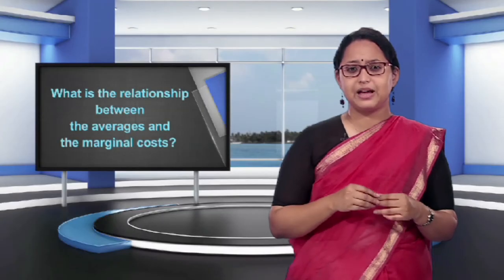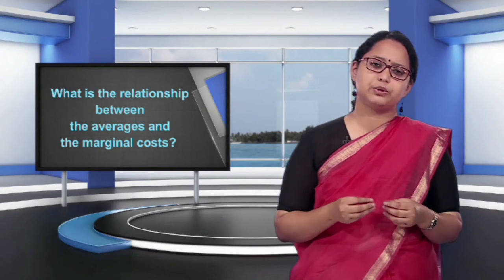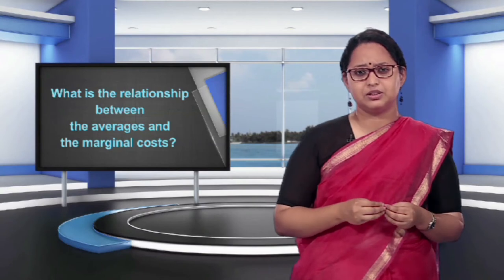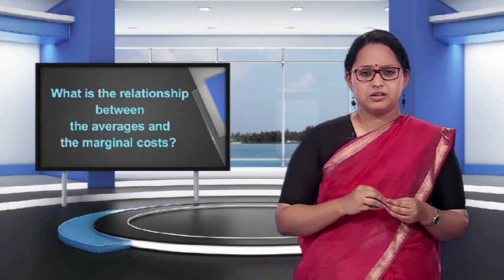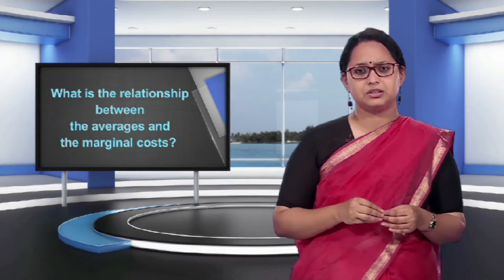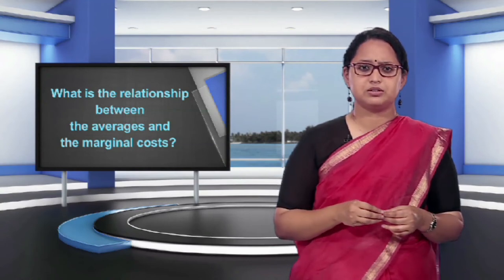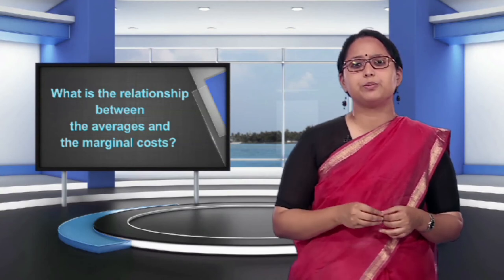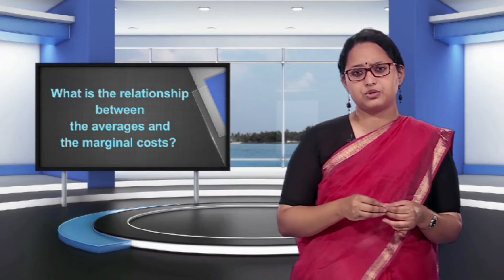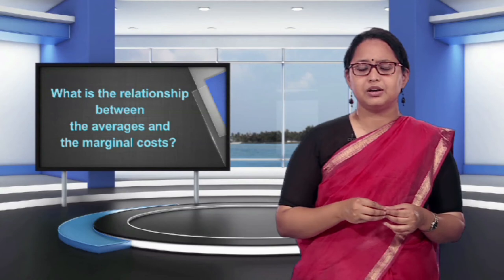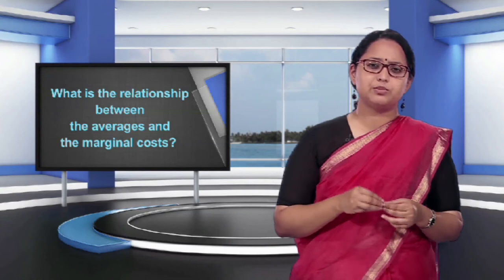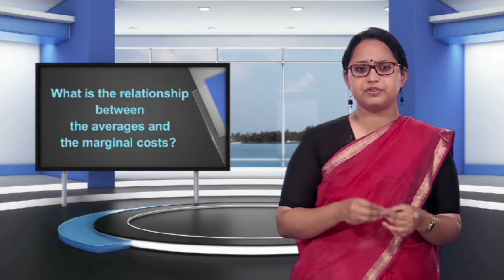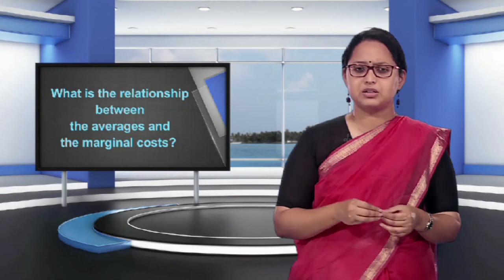What is the relationship between the averages and the marginal costs? Let us understand how marginal and averages are related with an example. Suppose a student scored average marks of 50 in 5 subjects. If her marks for the 6th subject are 80 — more than her average of 50 — the total score of 6 subjects becomes 330 and the average goes up to 55. In another case, with the same average of 50, if the marks for the 6th subject were 20 — much less than her average — the average of 6 subjects will fall to 45.